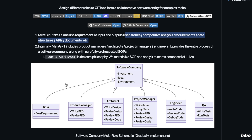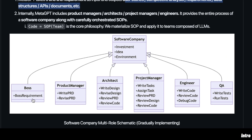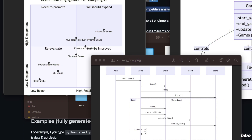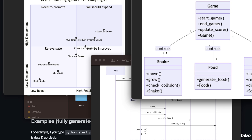Basically, there are a number of different agents working together. For example, you have a boss agent that comes up with the requirements, then a product manager agent that writes the PRDs, there is an architect agent, a project manager agent, engineers who implement the code, and then a QA agent which looks at the quality of the implementation. It's an amazing project because with a single line of requirement, it feels like you have a whole group of people implementing different things for you.